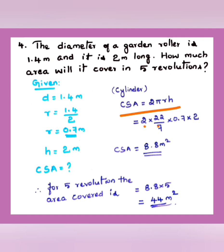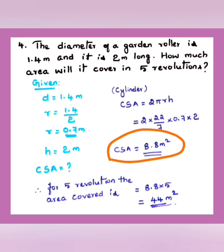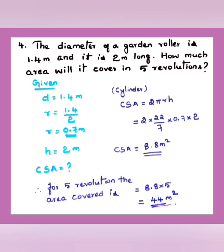Substituting the values with decimal simplification: 2 × (22/7) × 0.7 × 2 = 8.8 m² for one revolution. For 5 revolutions, area covered = 8.8 × 5 = 44 m².